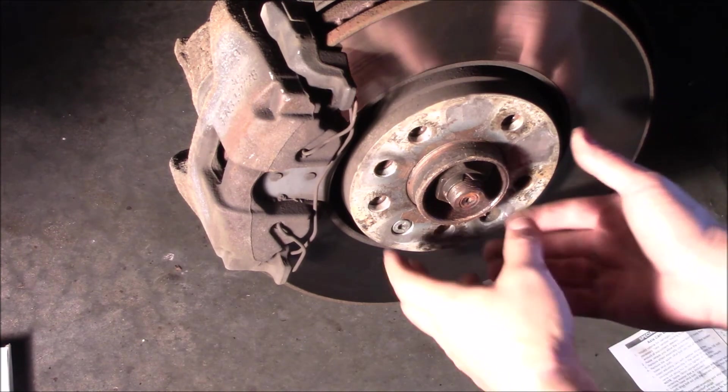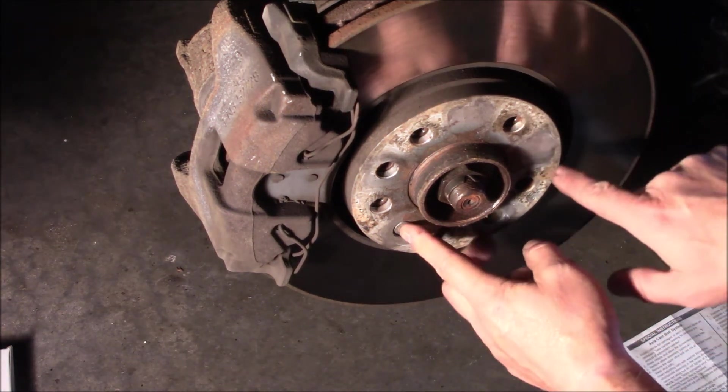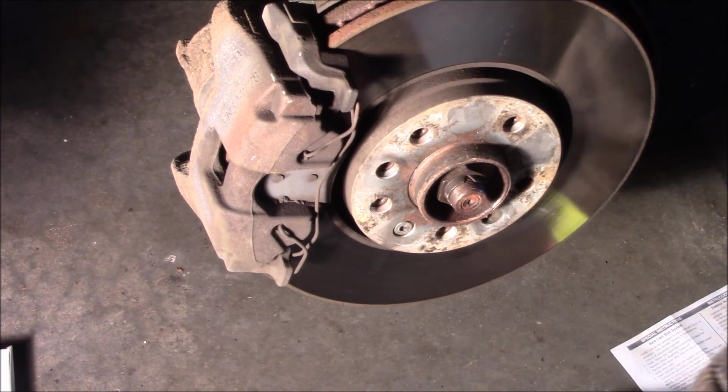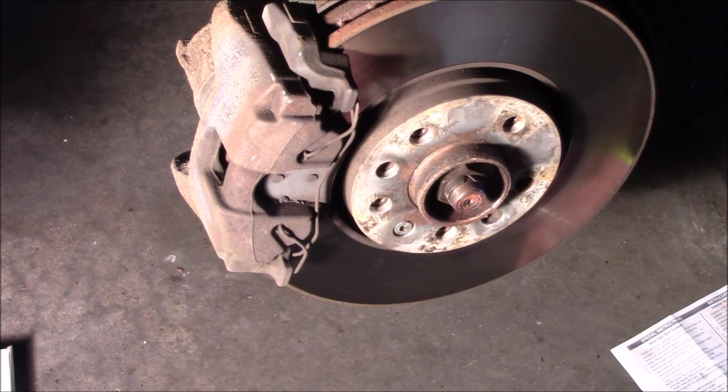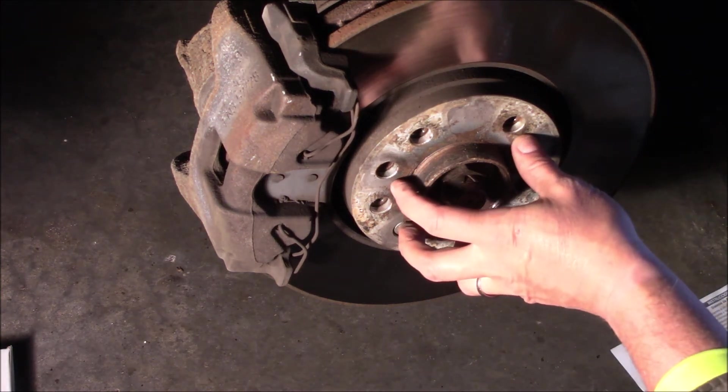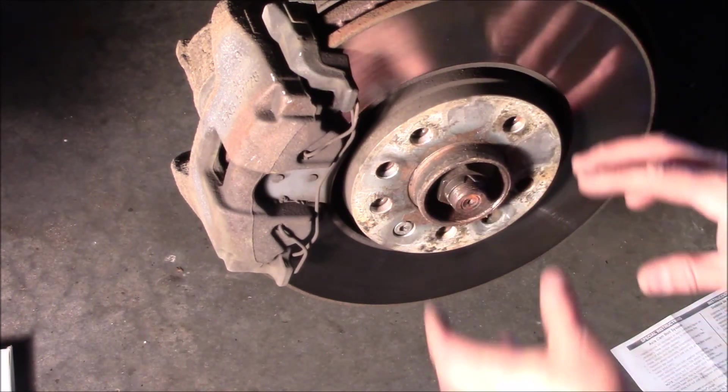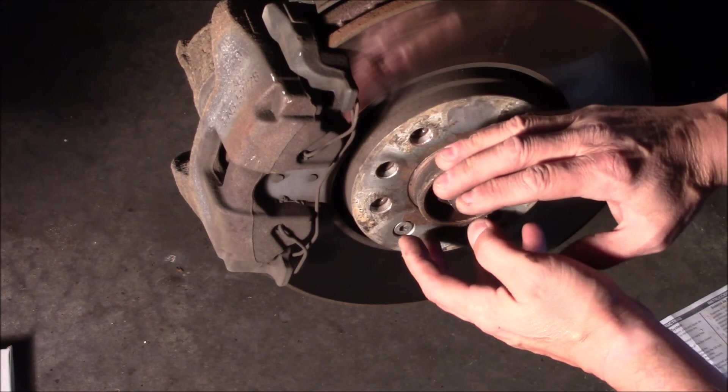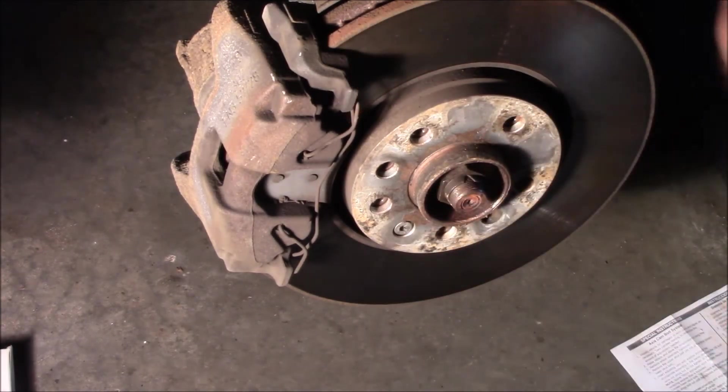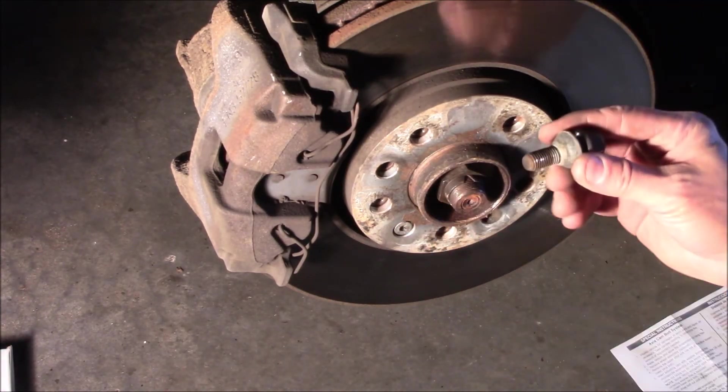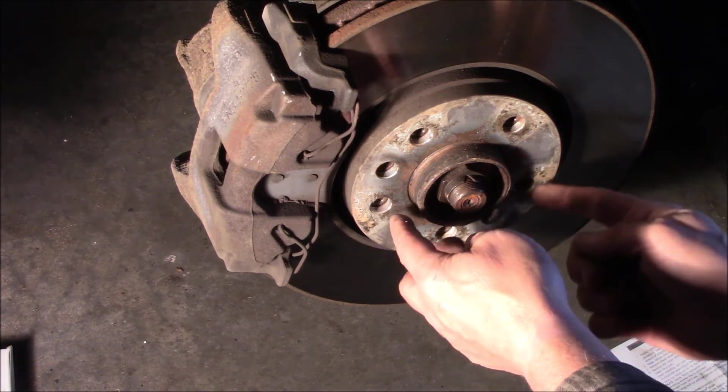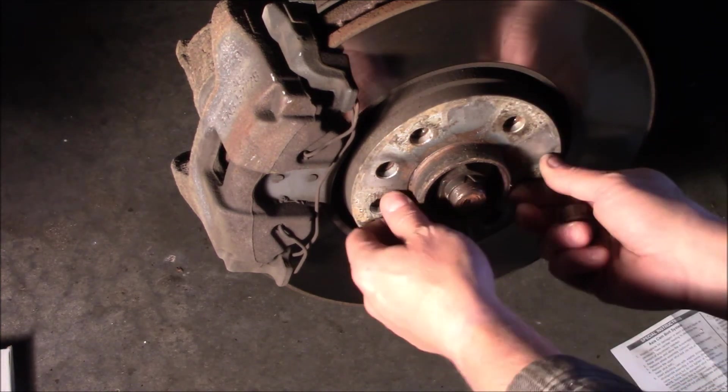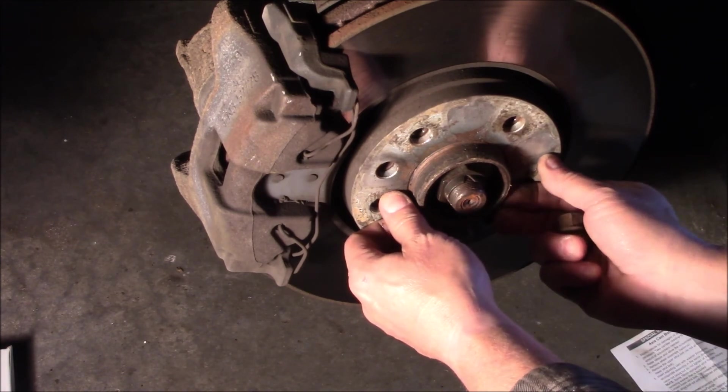This happens to be a European car and the rotor is attached by a bolt or a screw, similar to a Honda and some Kias. If you have a North American car with lug nuts instead of bolts, you would want to tighten up your rotor—run the lug nuts down to keep the rotor straight when you're using your little tool here.